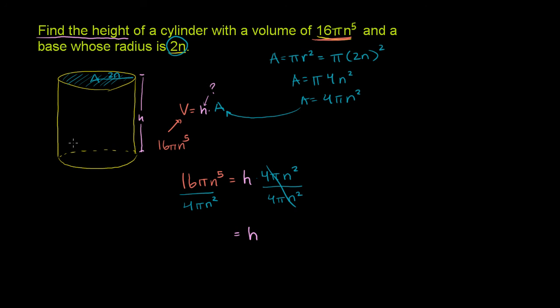We can simplify this a good bit. We have a π divided by a π, so those cancel out. We have a 16 divided by 4. That cancels out to a 4 divided by a 1, or just a 4. And then you have n to the fifth over n squared. So when you have an exponent in the denominator, you can subtract it from the exponent in the numerator. So this is going to be 4 times n to the 5 minus 2 power, which is 3, n to the third power. And we're done. The height of the cylinder is 4n to the third power.